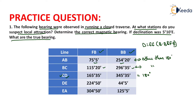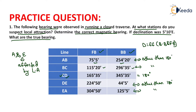After calculating the difference of backbearing and forebearing of lines DE and EA, it is other than 180 degrees. So lines DE and EA are also not free from local attraction. In a closed traverse, it is easy to determine which stations are affected. Stations A, B, and E are affected by local attraction, while stations C and D are free from local attraction.